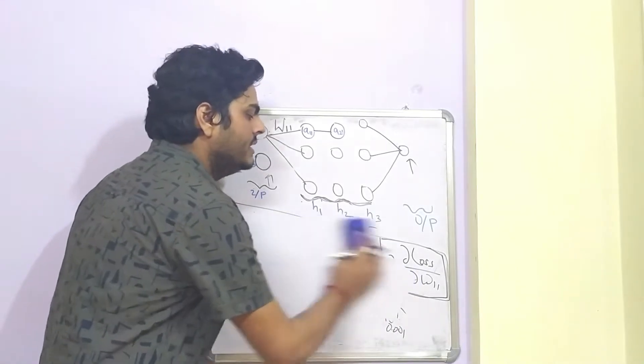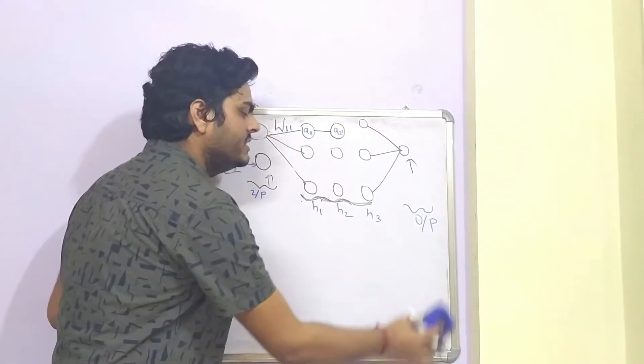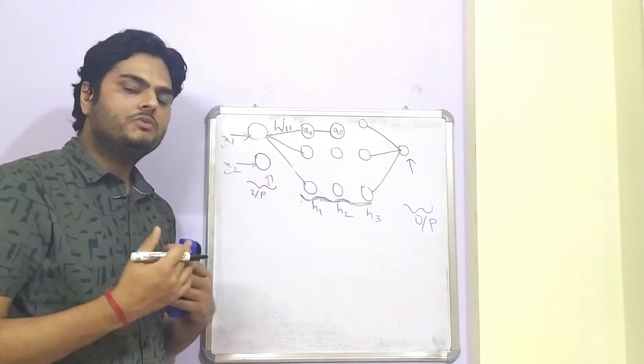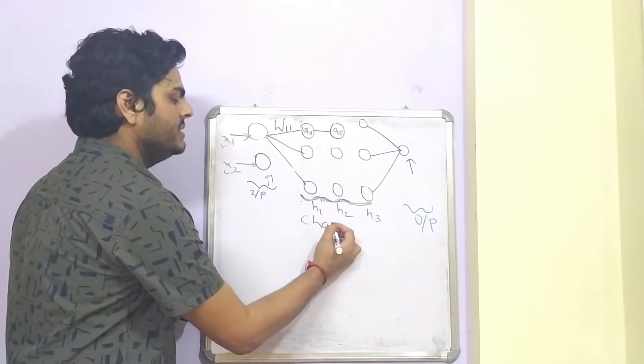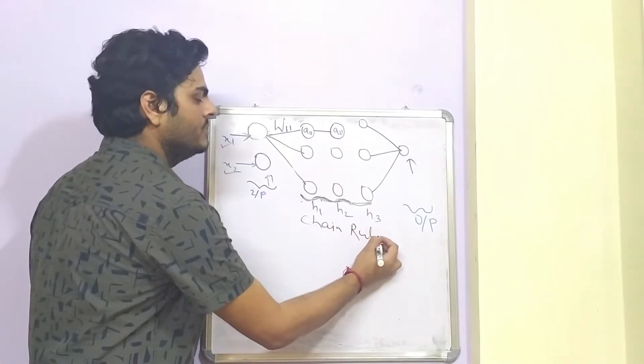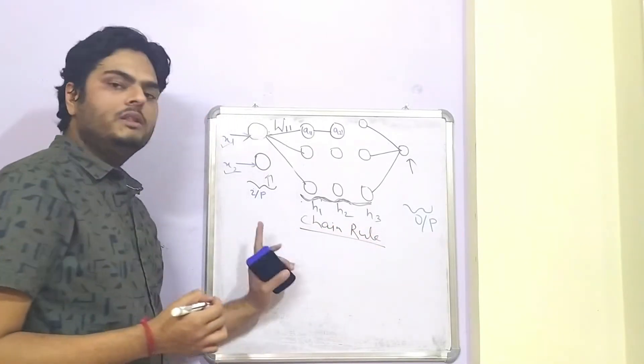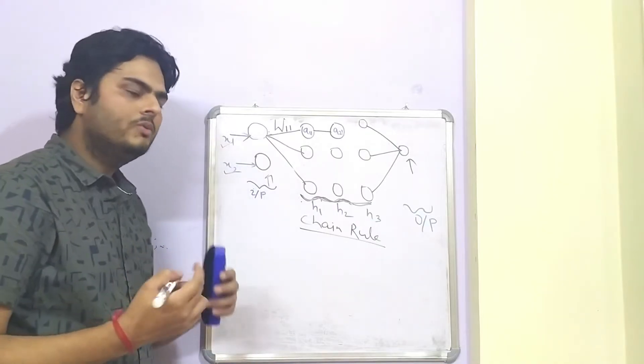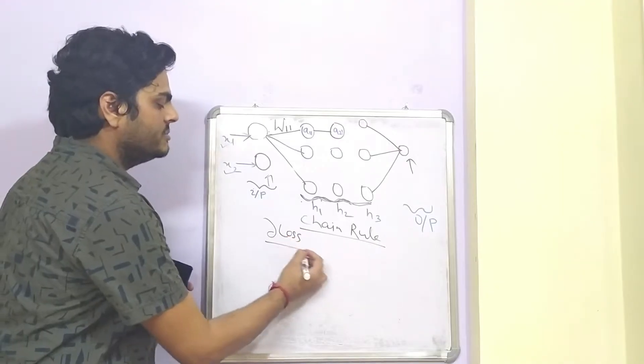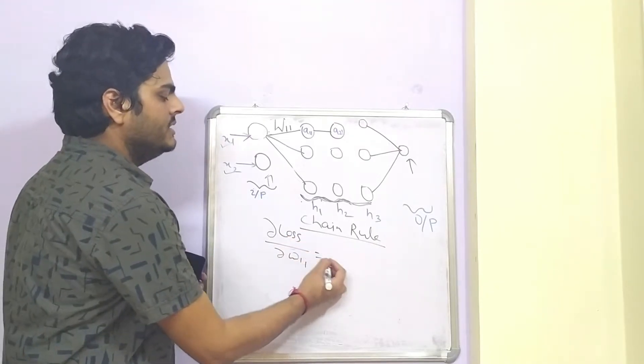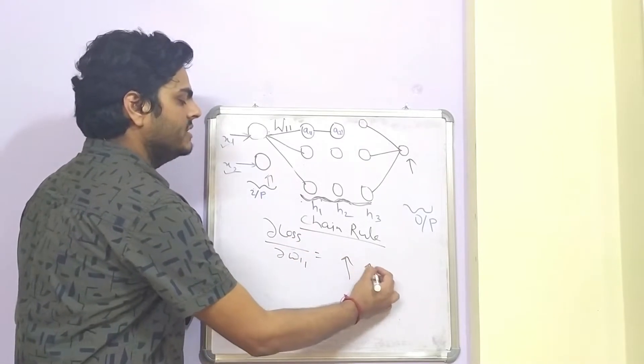So if you can recollect little bit about how gradients work. In my last video, I was talking about something known as chain rule in mathematics. In this chain rule, if we have to compute derivative of loss with respect to W11, then we had multiple terms here. So these are different derivatives actually, term 1, term 2, term 3.